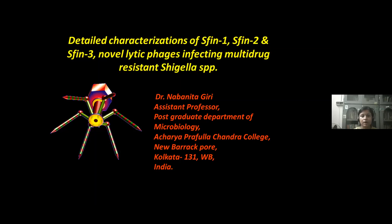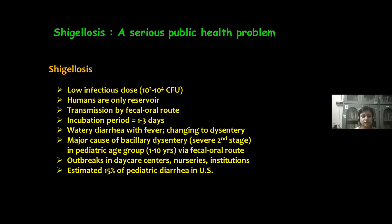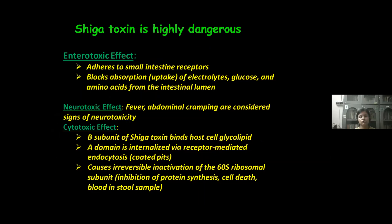Multidrug resistant Shigella species. Shigellosis is a serious public health problem. More than millions of people die each year throughout the third world countries. Humans are the only reservoir and transmission is caused by the fecal-oral route. The disease Shigellosis is caused by the bacteria Shigella species: Shigella flexneri, Shigella dysenteriae, Shigella sonnei, and Shigella boydii.